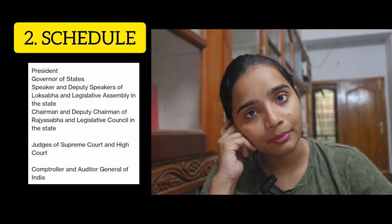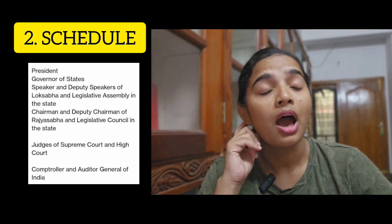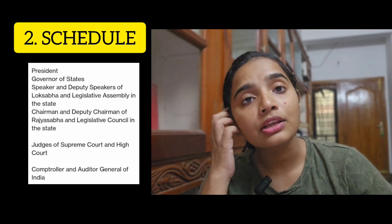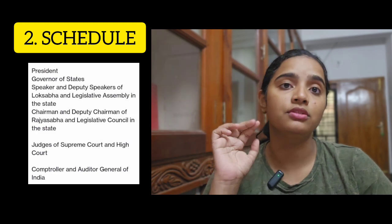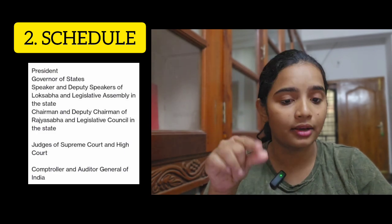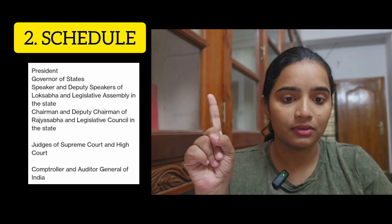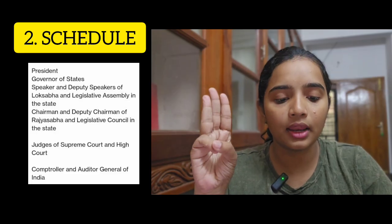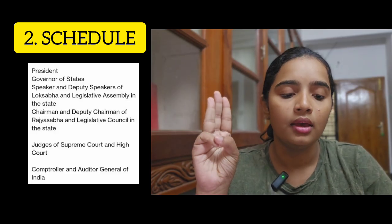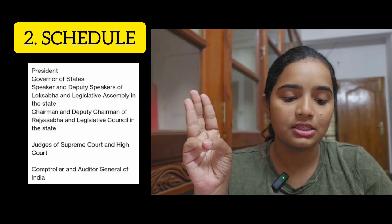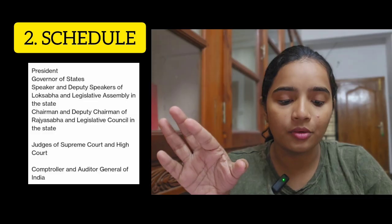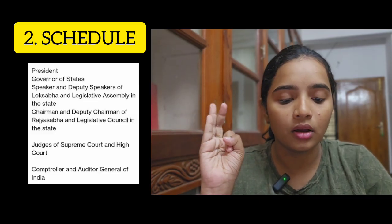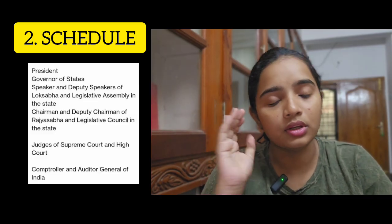The second schedule: Emoluments, Elements and Privileges. This covers the President of India, Governors of the State, Speaker and Deputy Speaker of Lok Sabha, Rajya Sabha, Legislative Assembly, Legislative Council, Judges of Supreme Court, Judges of High Court, and Controller and Auditor General of India.